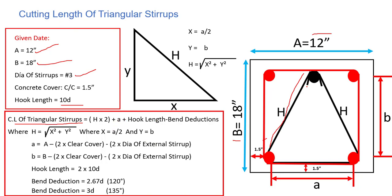Then we add hook length and subtract bend deductions. Here h is equal to the square root of x² + y² — we use Pythagoras theorem — where x is equal to a divided by 2. We divide the triangle into two parts to make it a right angle triangle.